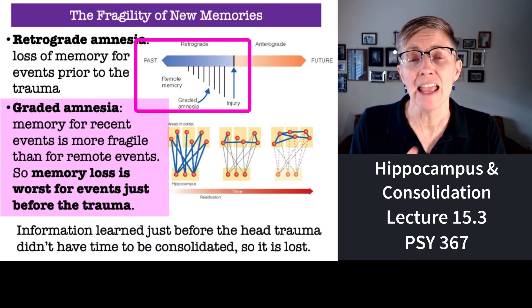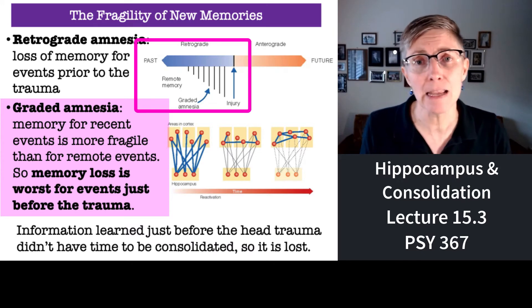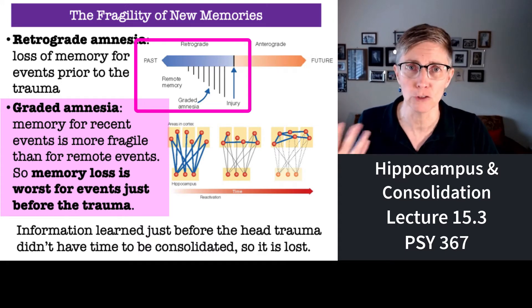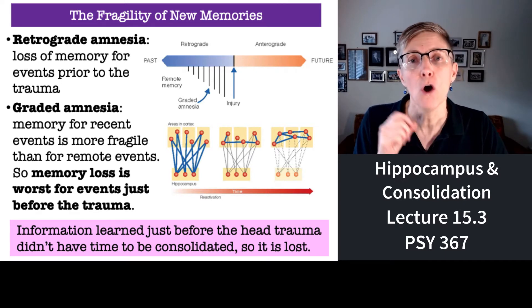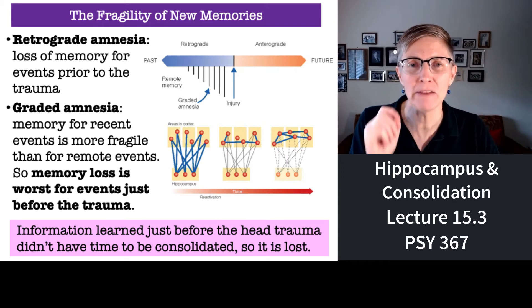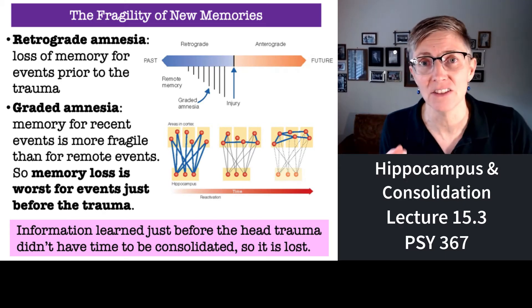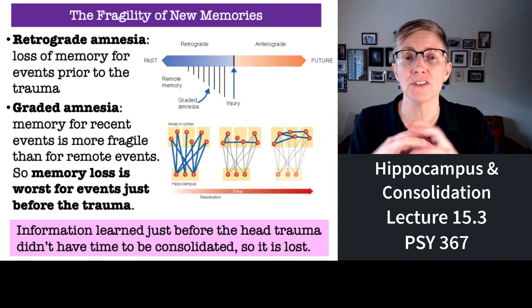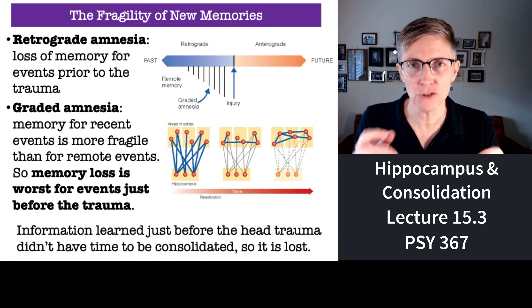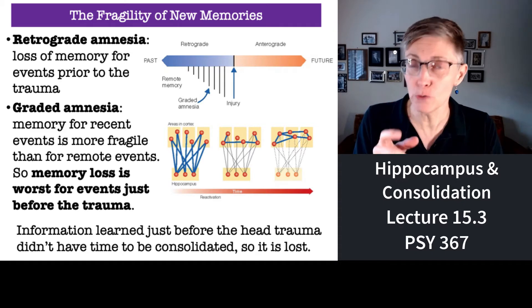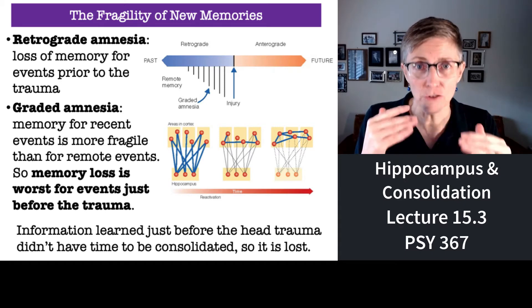If something happened 10 minutes before a car accident, you're more likely to remember it. An hour or a day before — you're much more likely to remember it. So graded amnesia means our memory loss is greatest for things that happened just before the head injury. In the standard model, this reflects the disruption of the hippocampus actively sending information to your cortex. New memories are the most fragile and don't get a chance to become consolidated if head trauma disrupts that process.